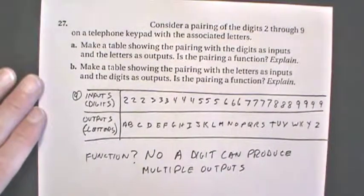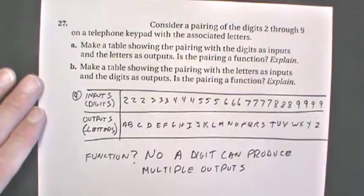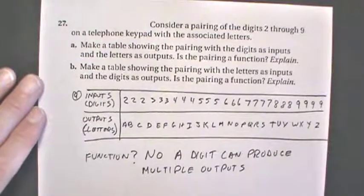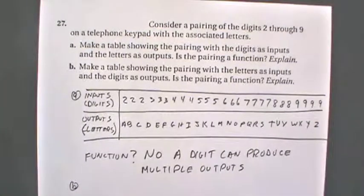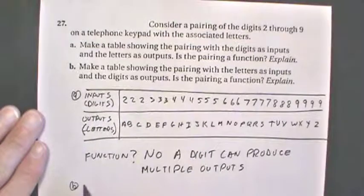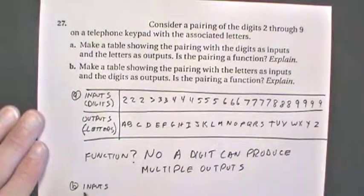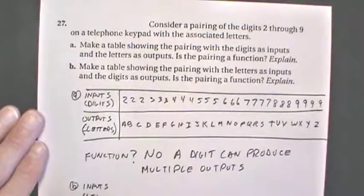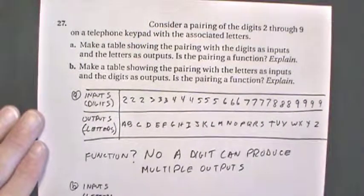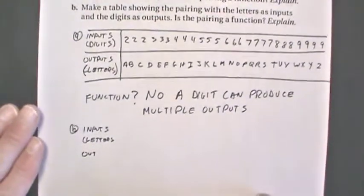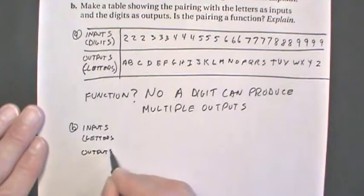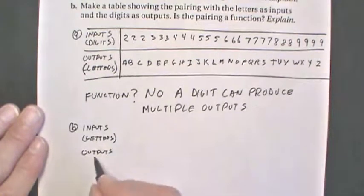Okay, for B, it says make a table showing a pairing of the letters as inputs and the digits as outputs. Is this pairing a function? Let's go to B now. So let's have our inputs, which this time is going to be letters. We have our outputs, which are going to be digits.